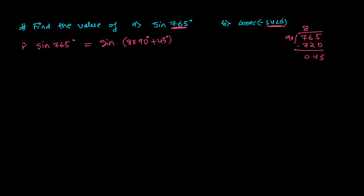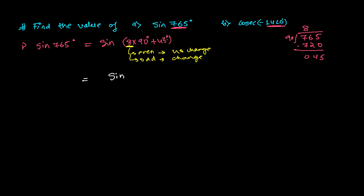After writing this, look at the multiple of 90. If the multiple of 90 is an even number, there will be no change in the trigonometric ratio. If it is an odd number, there will be a change in the trigonometric ratio. Here 8 is even, so I will write the same ratio — sine — and the angle will be 45.